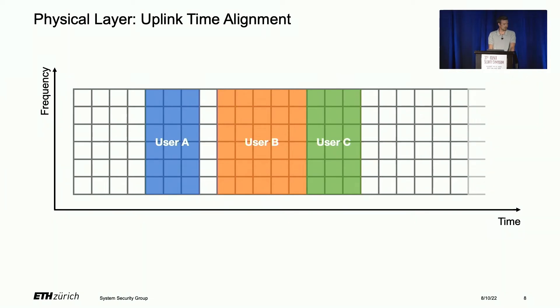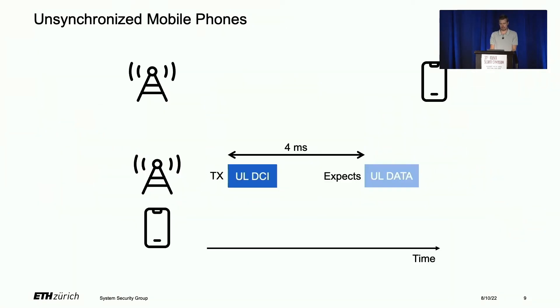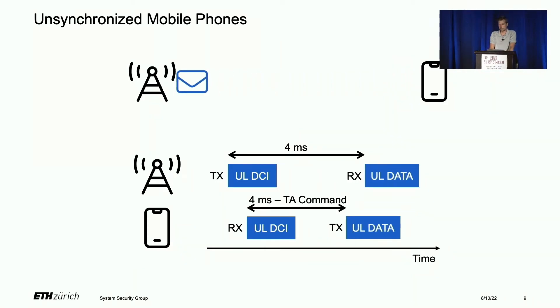In the uplink resource grid, the user data will be misaligned by some propagation delay. The base station can estimate this propagation delay, and our sniffer can do this as well. In LTE, we have a special message for this called the timing advance command, which tells the user how much it's delayed and how much in advance it should send the message. The base station sends the uplink DCI, and instead of waiting four milliseconds, the phone waits four milliseconds minus the timing advance command value, then sends the uplink data, which arrives at the base station at the expected time.